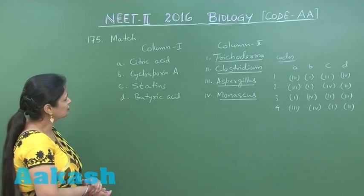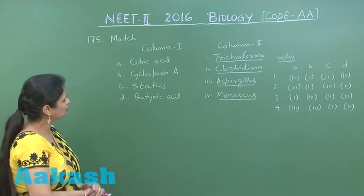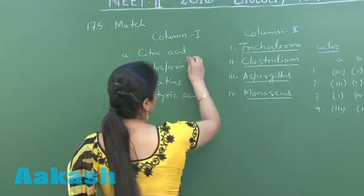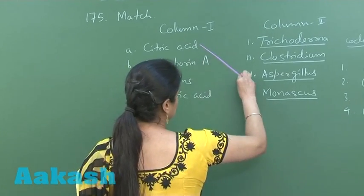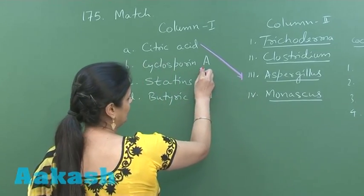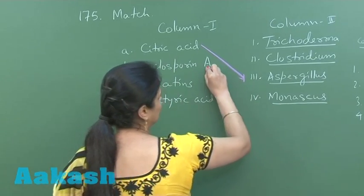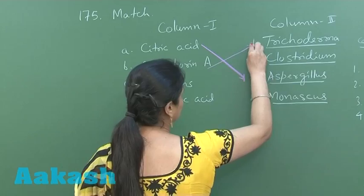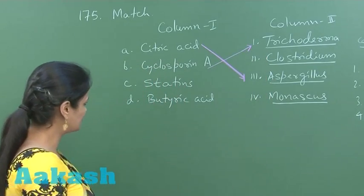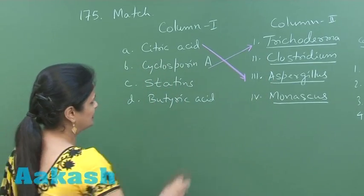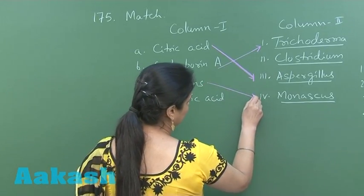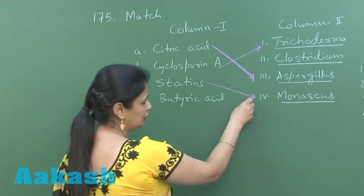We have to match Column 1 and Column 2. Citric acid is obtained from Aspergillus niger. Cyclosporine is extracted from Trichoderma — it is an immunosuppressant. Statins are extracted from Monascus and are used for reducing cholesterol.